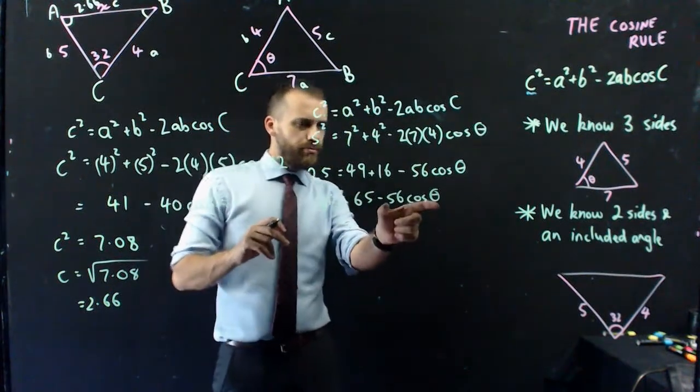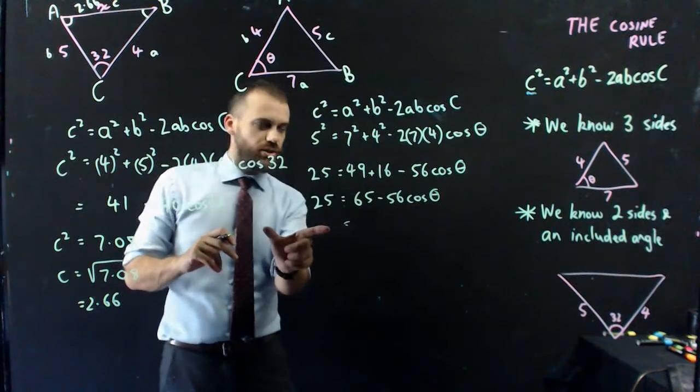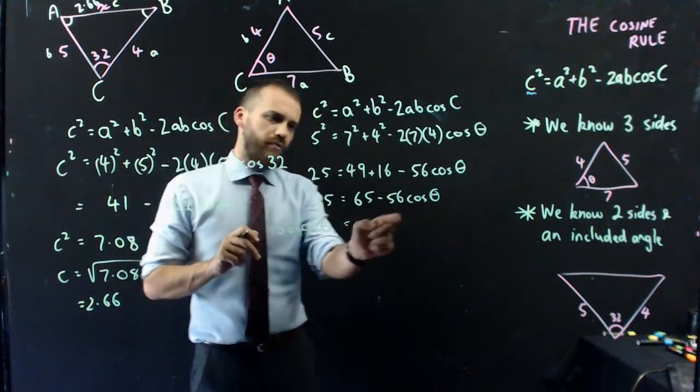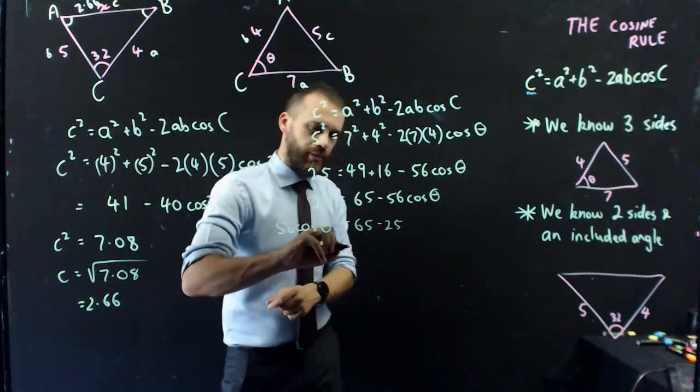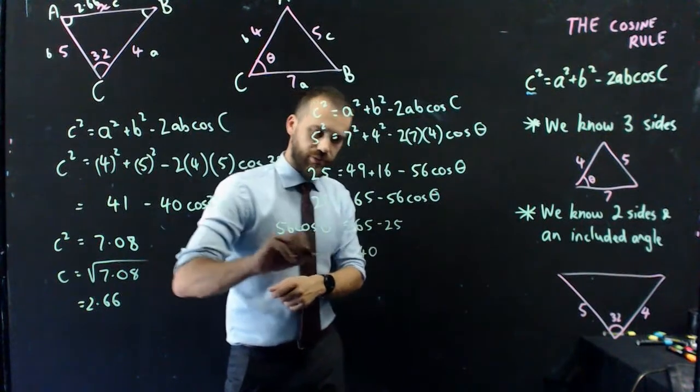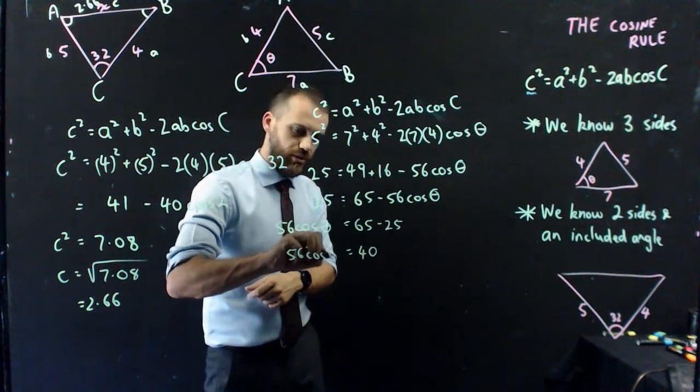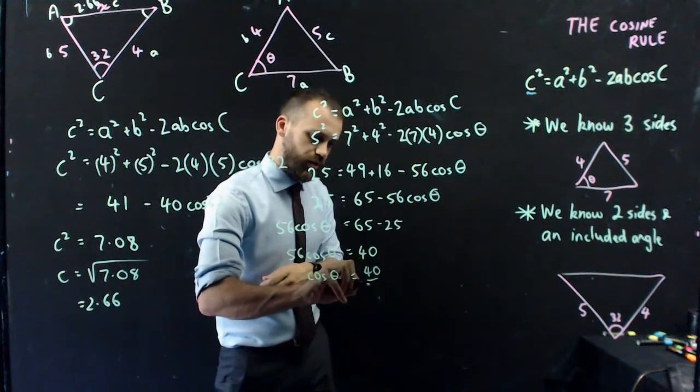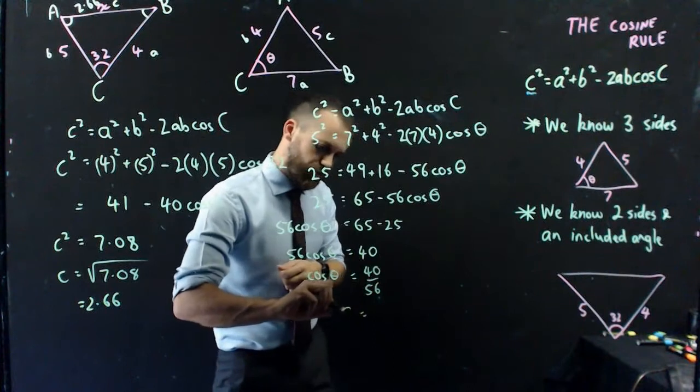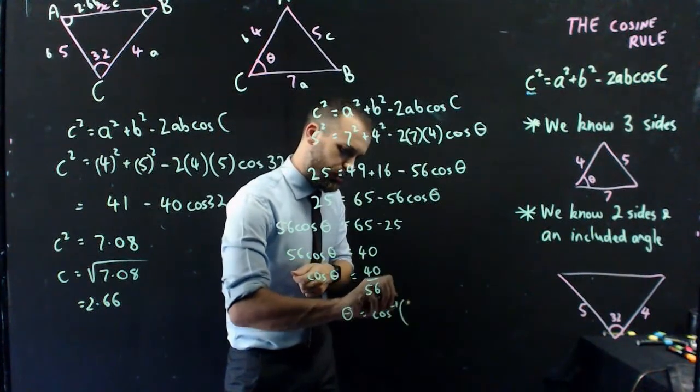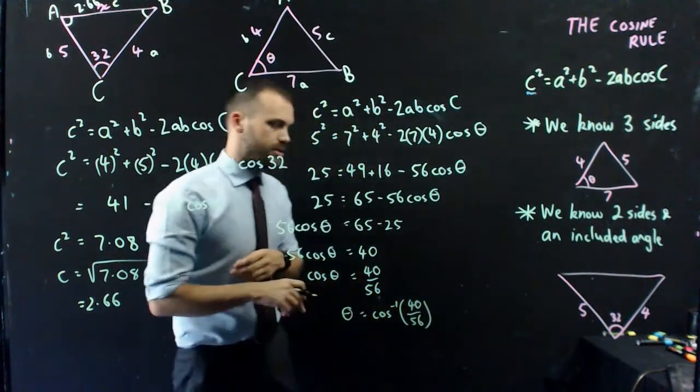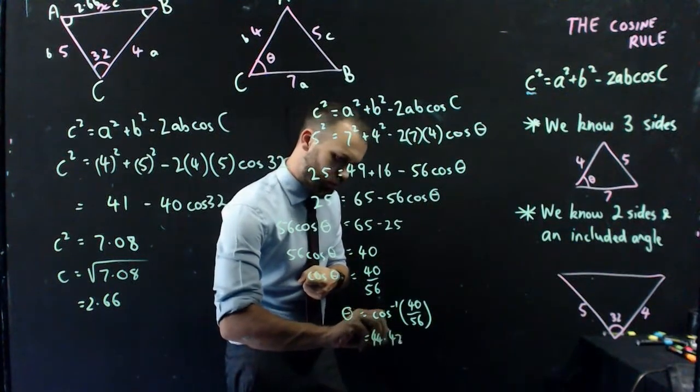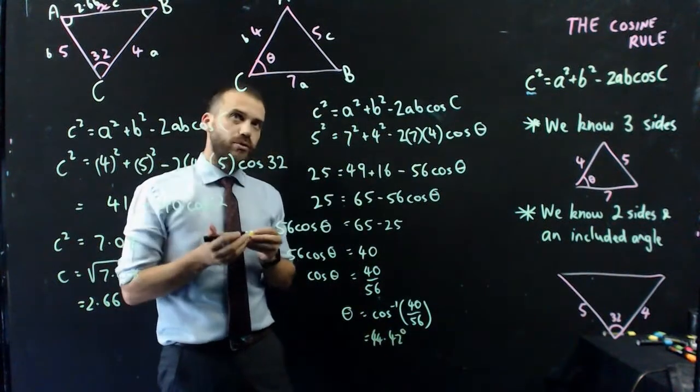I can move negative 56 cos theta to this side to make it positive. So that would be 56 cos theta. And I'll move that 25 over to here. So now that's 65 minus 25. So now I have 40 equals 56 cos theta. Now we have cos theta equals 40 over 56. And theta equals inverse cos 40 over 56. Calculator, and we'll get an answer. And my answer is 44.42 degrees. And that angle there is 44.42 degrees.